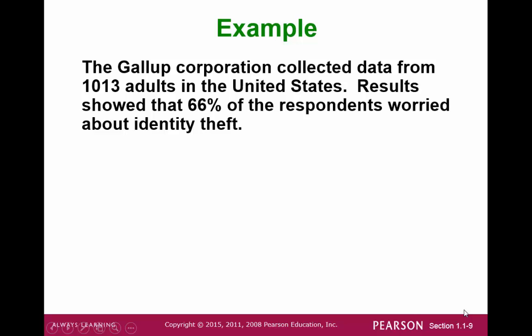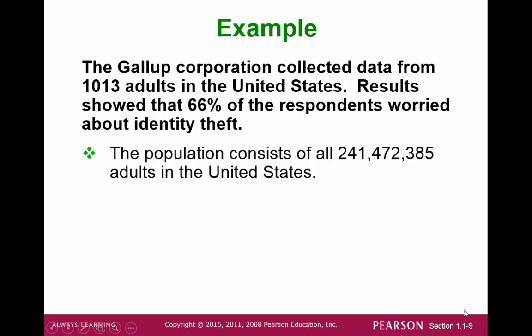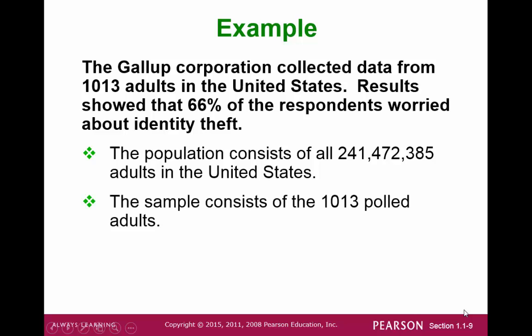Here is another example. The Gallup Corporation collected data from 1,013 adults in the United States. Results showed that 66% of the respondents worried about identity theft. In this example, the population would be every single person in the United States — about 241,472,385 adults around 2008. The sample consists of the 1,013 adults that were polled.